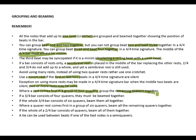If a rest comes first in a group of four quavers, you may group the remaining quavers together — even if the number of quavers is not even, because of the rest you are allowed to group the remaining ones together. If a 3/4 bar consists of four quavers they may be beamed together. If the whole 3/4 bar consists of six quavers they may also be beamed together. Where a quaver rest comes first in a group of six quavers, beam all the remaining quavers together.